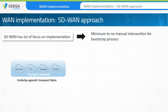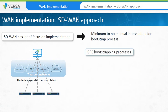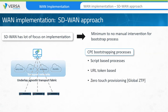The SD-WAN framework also includes an orchestrator component which can be programmed to bootstrap the CPE device automatically. Some of the approaches available today for CPE bootstrapping are: using scripts to automate CPE provisioning, using URL tokens, zero-touch provisioning, and mobile app-based provisioning. In all of the above-mentioned approaches, the appliance will be automatically bootstrapped by the orchestrator.